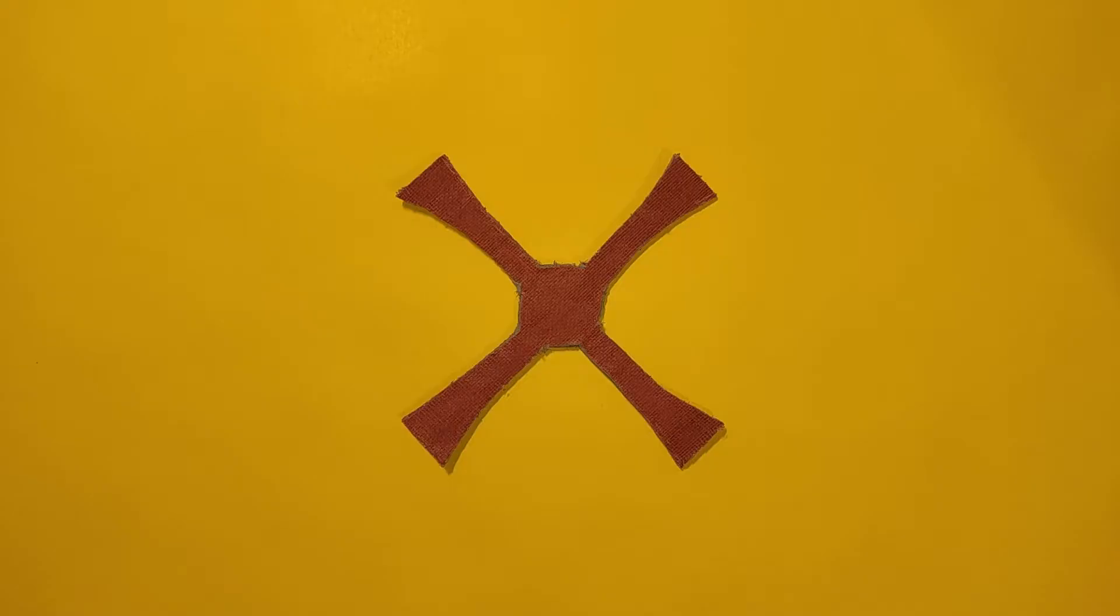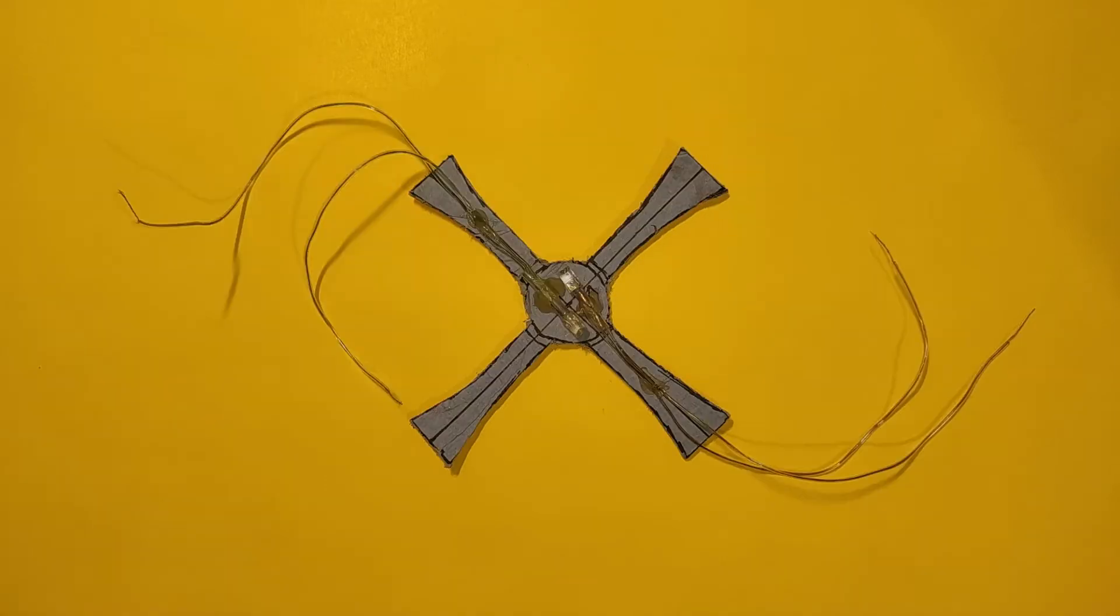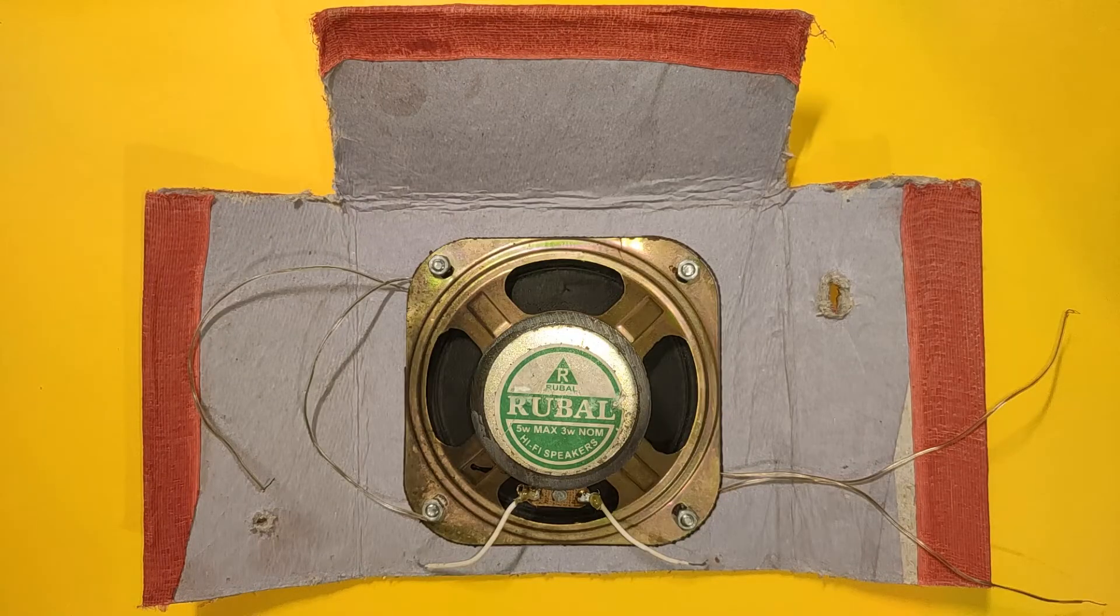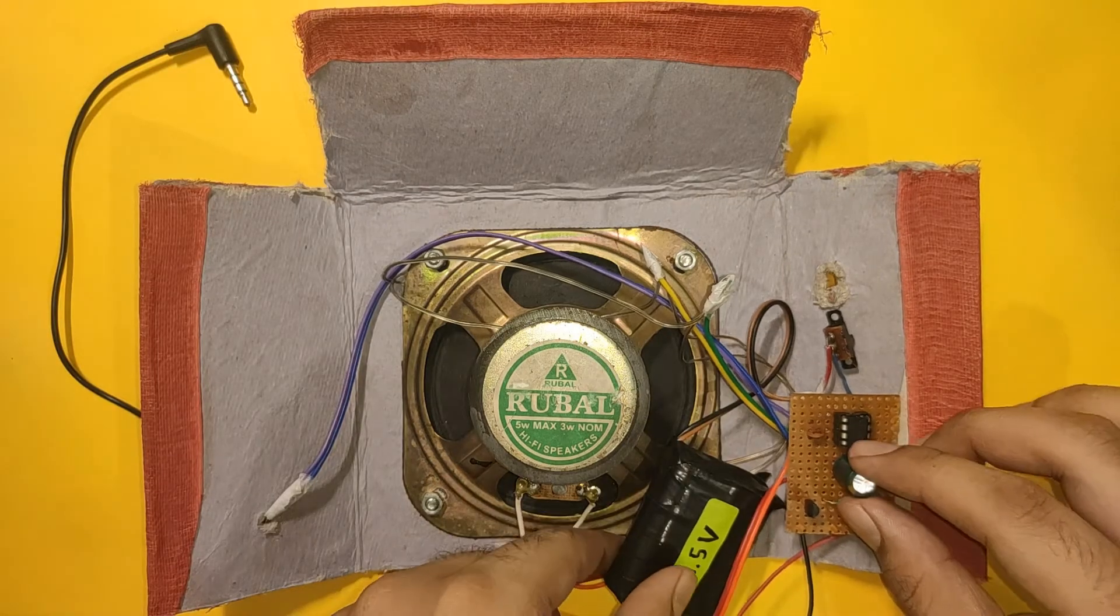Hot glue the LEDs to the grill and fix it to the case. Screw up the speaker with nuts and bolts, then make all the connections to the circuit board.